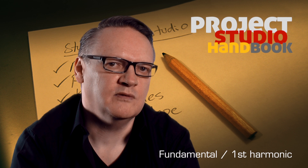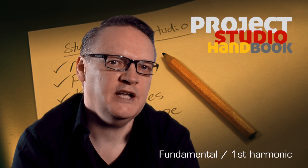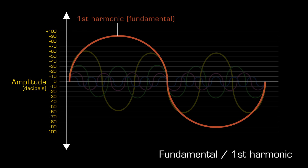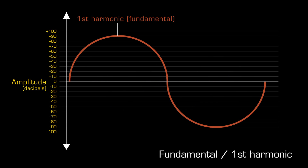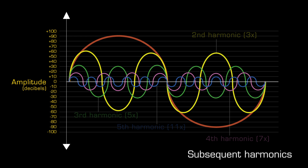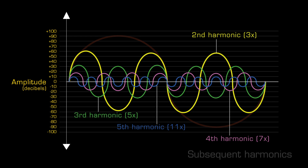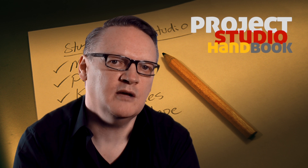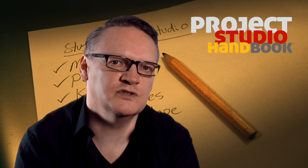In a complex sound, the harmonic with the highest amplitude — the loudest — and the lowest frequency — the basiest — is known as the fundamental. It is also known as the first harmonic. Additional harmonics, each with a progressively lower amplitude and higher frequency, will be named the second, third, fourth, etc. harmonics. Higher harmonics are often referred to as overtones by musicians.